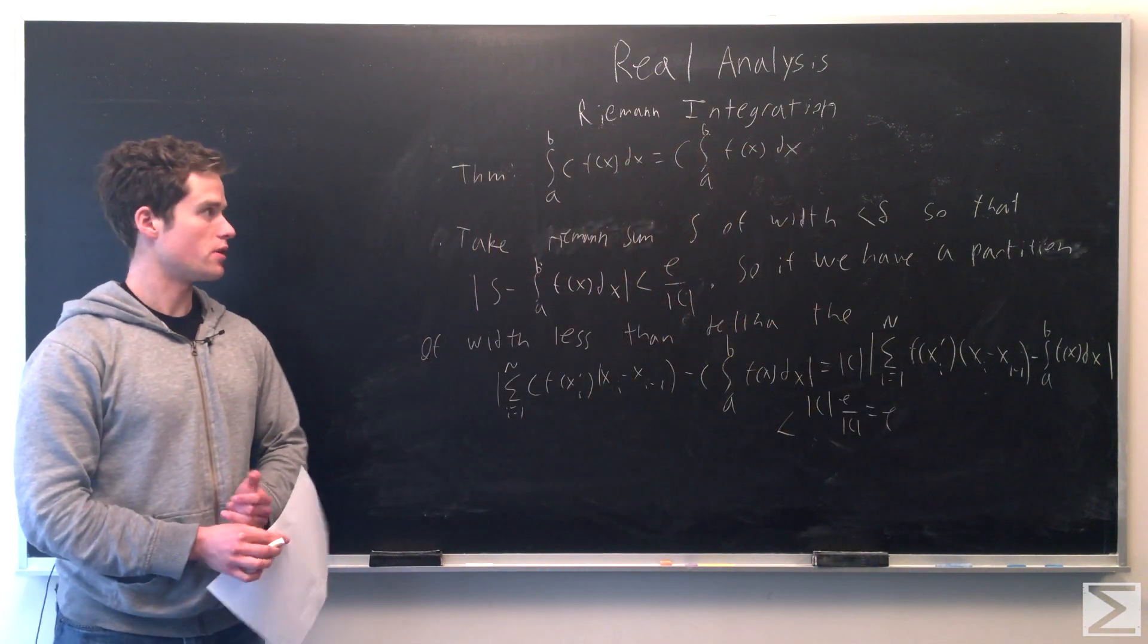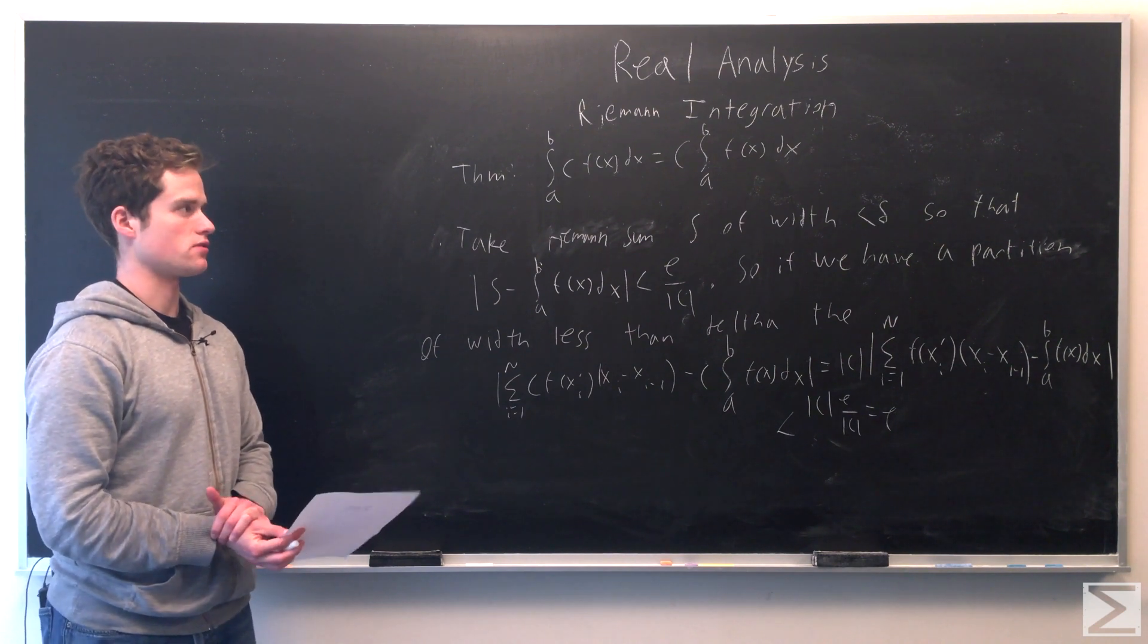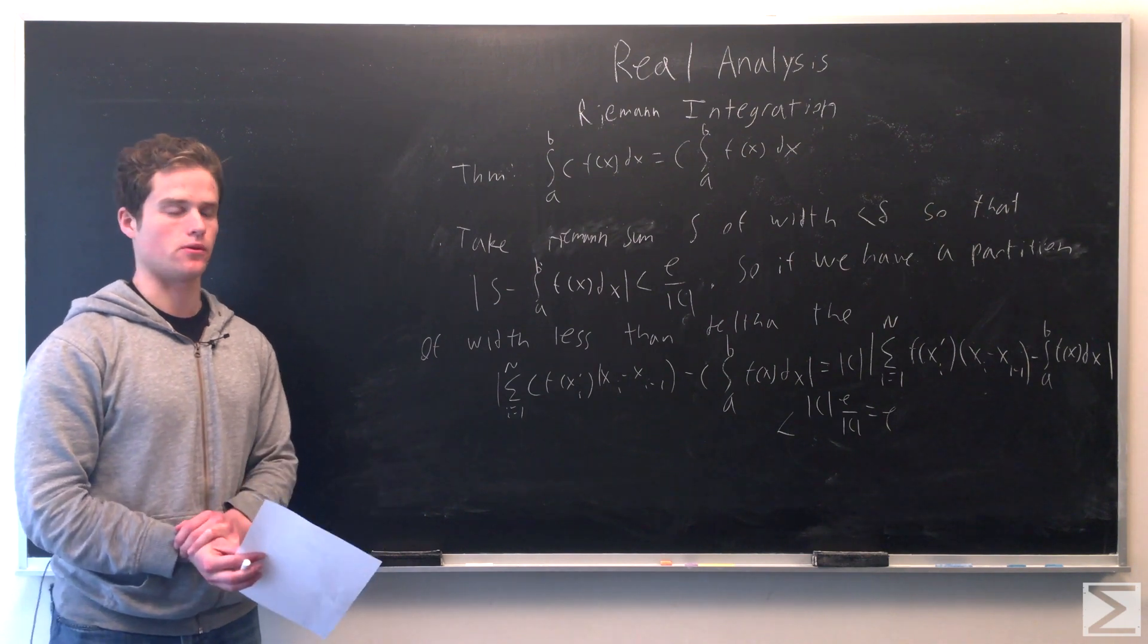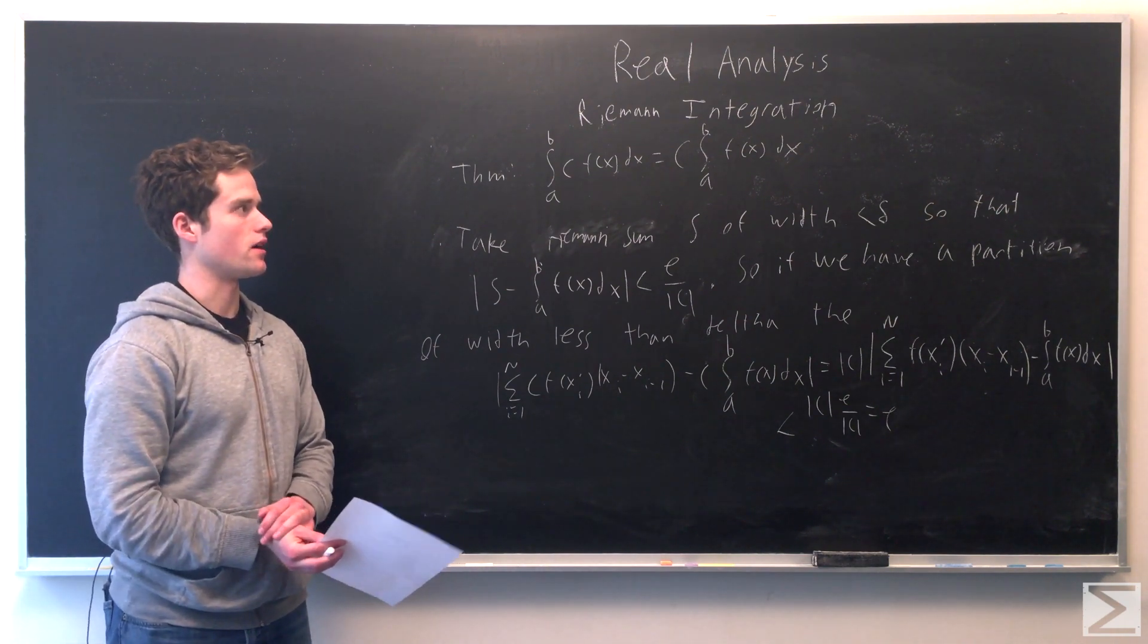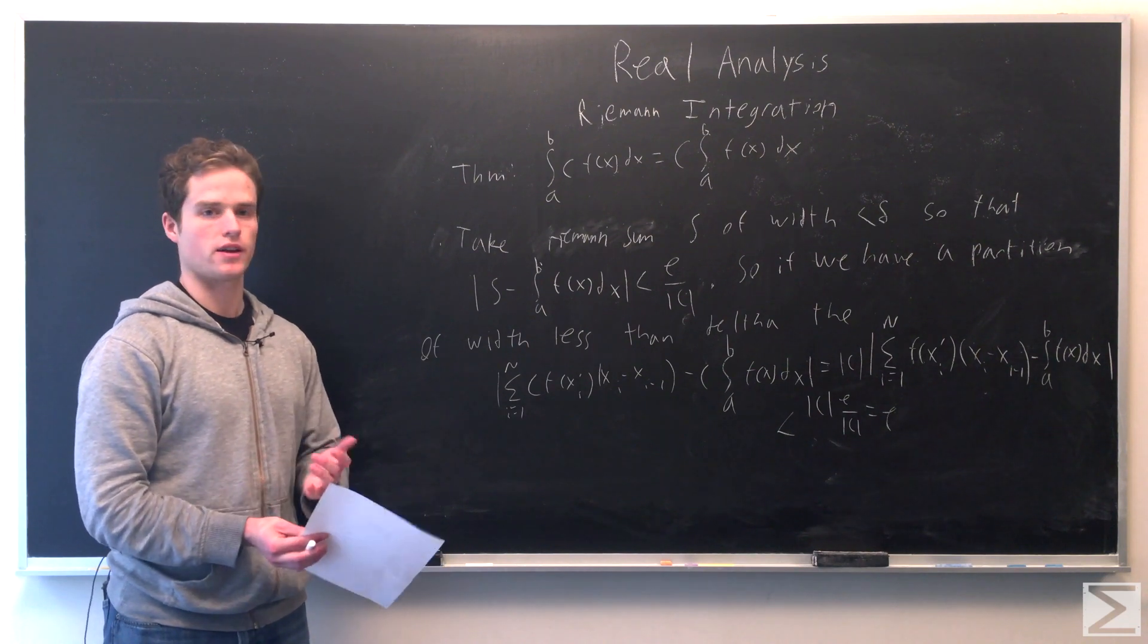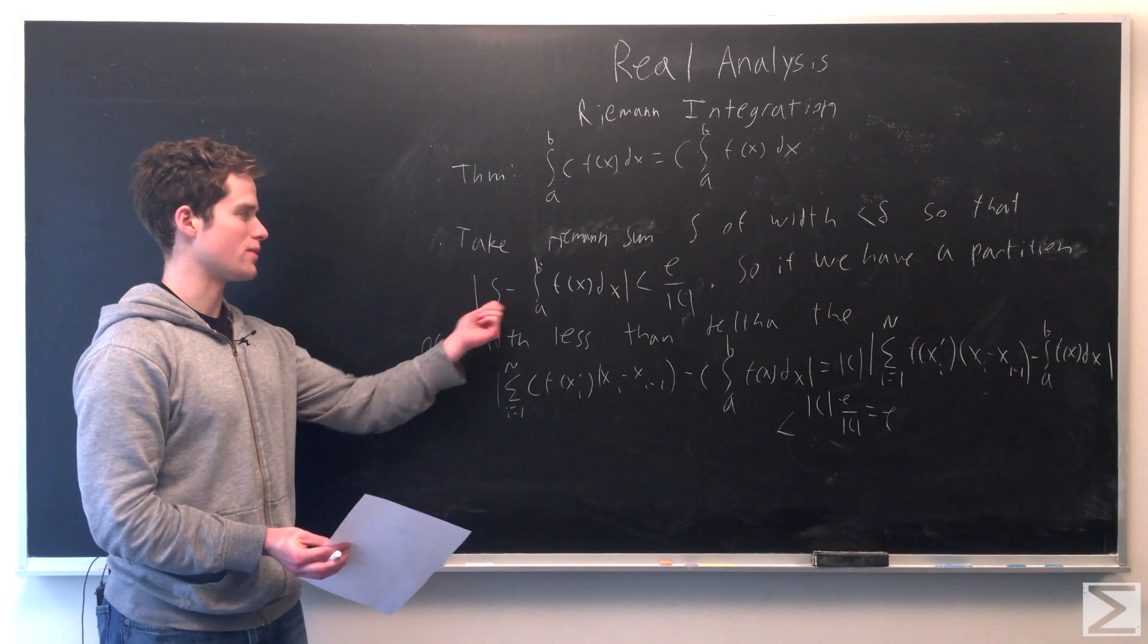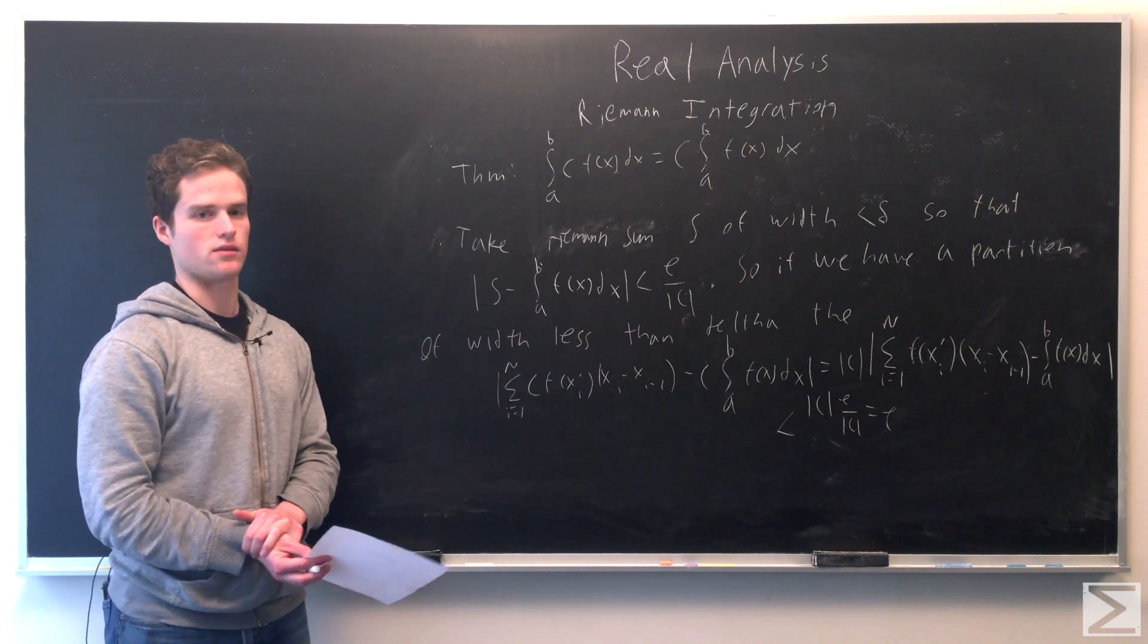We can show the integral from a to b of c times some function f(x)dx equals c times the integral from a to b of f(x)dx for f(x) some Riemann integrable function. We're going to take some Riemann sum s of f(x), taking the width of the partition to be less than δ, so |s - ∫ₐᵇ f(x)dx| is less than ε/|c|.